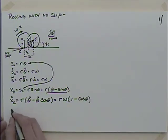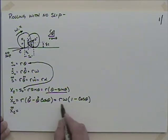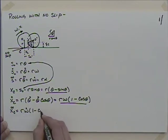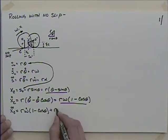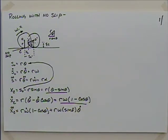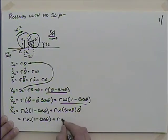Taking the derivative of X_C gives X_C_dot = R*(theta-dot minus theta-dot*cos theta). Since theta-dot is omega, I can factor that out: X_C_dot = R*omega*(1 - cos theta). Taking the second derivative, X_C double-dot = R*omega-dot*(1 - cos theta) plus, by the chain rule, R*omega*sin(theta)*theta-dot. Cleaning that up: omega-dot is alpha, theta-dot is omega, so X_C double-dot = R*alpha*(1 - cos theta) + R*omega^2*sin(theta).